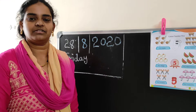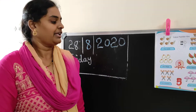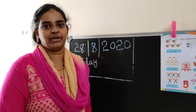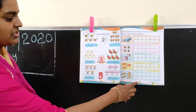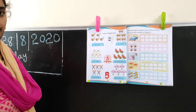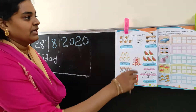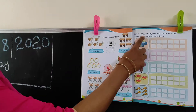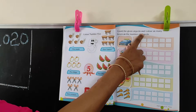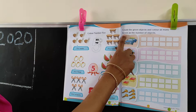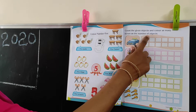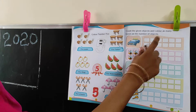Hi children. Good morning. Take your maths practice paper book. Open the book to page number 21. Count the given objects and color as many boxes as the number of objects.